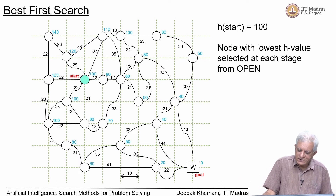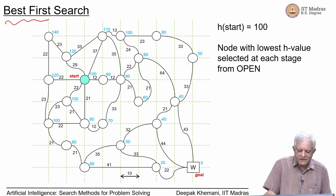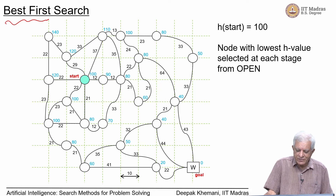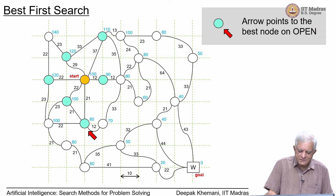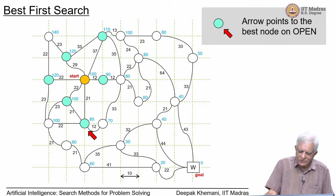The start node has a value of 100, and the lowest H value is selected at each stage from open. This earlier algorithm — best first search — did not take into account G values, only H values. Best first search picks the node with the lowest H value at any point, starting with the start node which has a value of 100. The nodes in green or cyan are on open, nodes in yellow are on closed, and the red arrow shows which is the best node on open to be picked next.